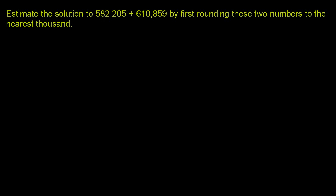Estimate the solution to 582,205 plus 610,859 by first rounding these two numbers to the nearest thousand. We're going to round each of these numbers to the nearest thousand and then add them, and that'll give us an estimate to this solution.